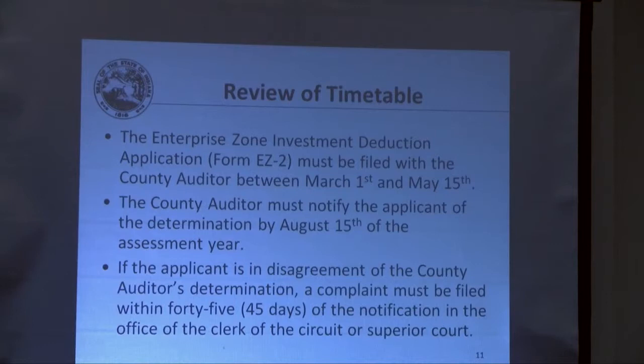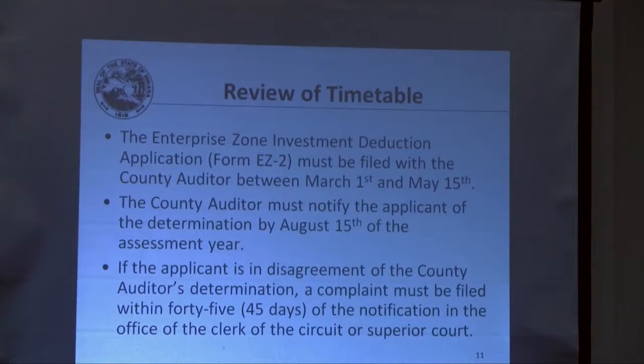The timetable for review: the deduction application, form EZ-2, must be filed with the county auditor between March 1st and May 15th in the year the deduction is requested. The county auditor must notify the applicant of the determination by August 15th of that same year. If the applicant disagrees with the county auditor's determination, they need to file that complaint within 45 days with the clerk of the circuit or superior court.